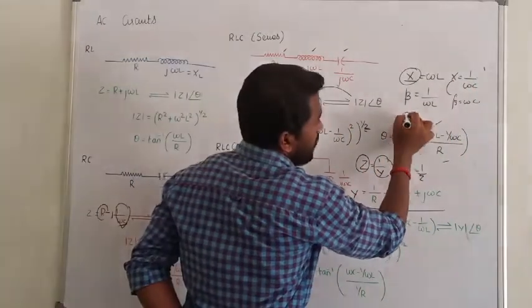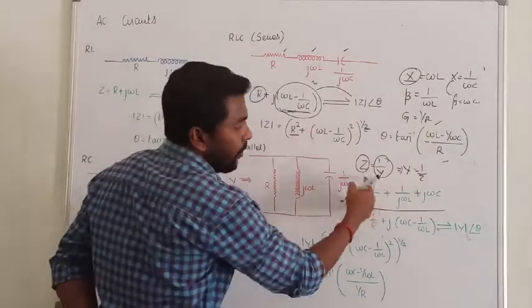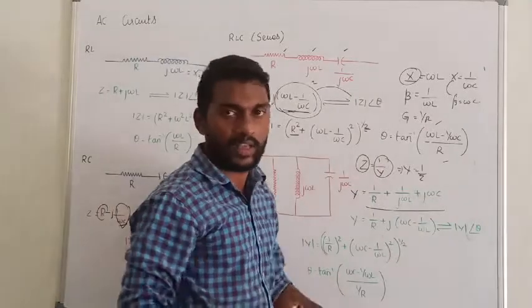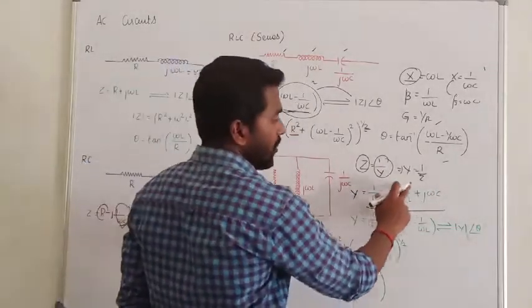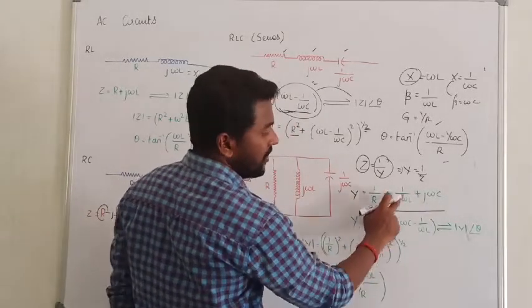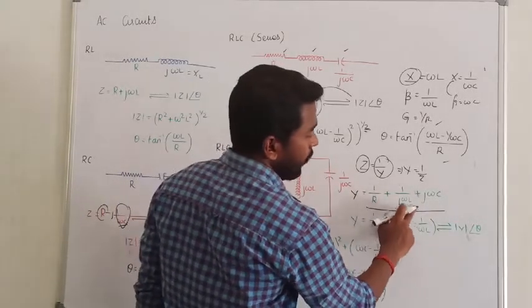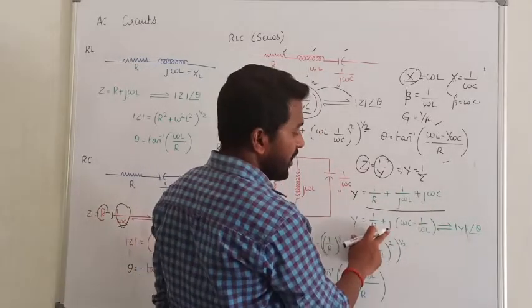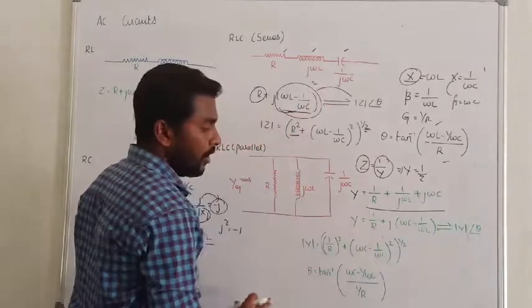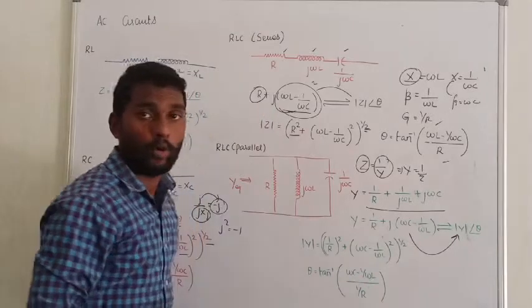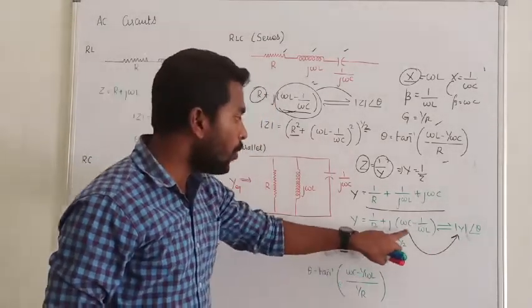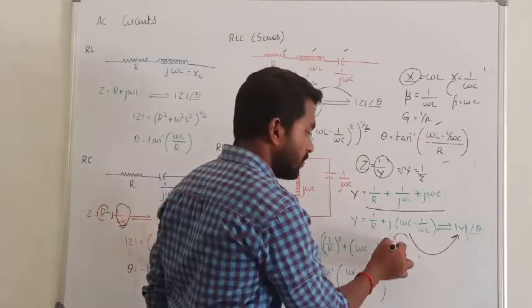The reciprocal of resistance R is conductance, denoted G, so G equals 1/R. Therefore the total admittance Y equals 1/R plus 1/jωL plus jωC. Simplifying, 1/jωL becomes minus j/ωL, giving Y equals 1/R plus j(ωC minus 1/ωL). To convert to polar form, the magnitude of Y equals the square root of (1/R) squared plus (ωC minus 1/ωL) squared, with all terms kept under the root.